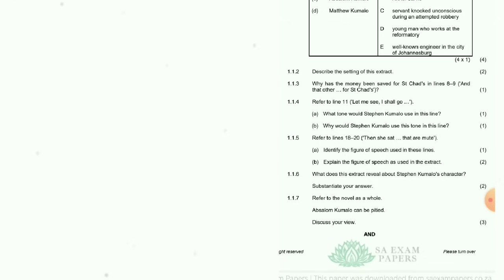Question 1.1.2: Describe the setting of this extract. The setting is the house of Stephen Kumalo and his wife before he leaves for Johannesburg, after he receives a letter from Reverend Msimangu, when they are counting their savings. Question 1.1.3: Why has the money been saved for St. Chad's in lines eight and nine? The money is intended to send their son Absalom to St. Chad's.